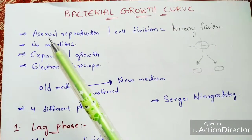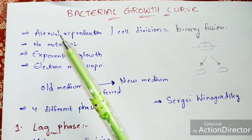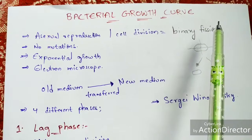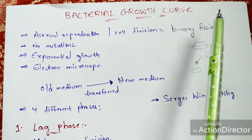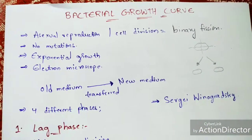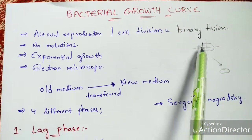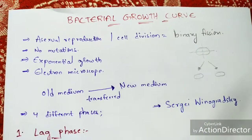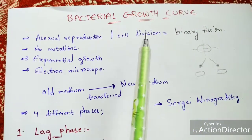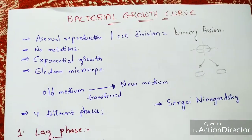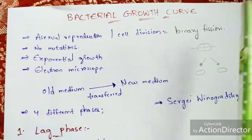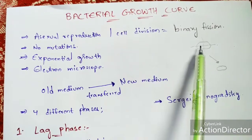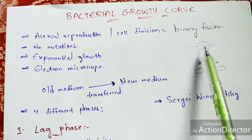There are two types of binary fission: longitudinal binary fission and transverse binary fission. I already explained these in my previous videos — the link will be given in the description box. If this is your bacterial cell, it will undergo either longitudinal or transverse binary fission, depending upon the type of bacteria — for example, Euglena and Paramecium.